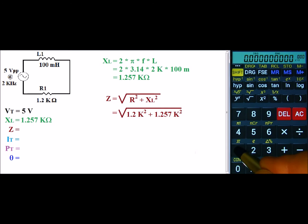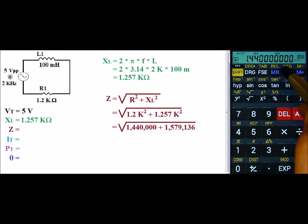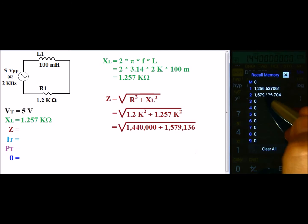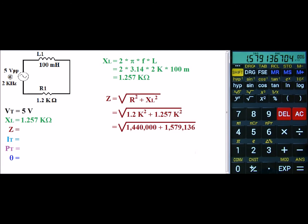Now I'll take the resistor, 1.2 exponent 3, again k. I'll square that, and that gives me 1.44 meg, plus, and now I'll go ahead and recall the value of the inductive squared. And that gives us a value of 3.019 meg.